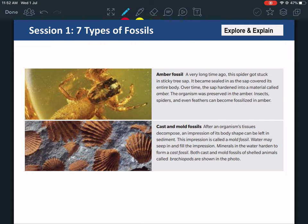You have casts and molds. We're going to do something like that in the lab as well. After an organism's tissues decompose, an impression of its shape can be left in sediment. The impression is called a mold fossil. It's preserved in sedimentary rock. Minerals in the water harden to form a cast fossil. Both cast and mold fossils of shelled animals are called brachiopods.